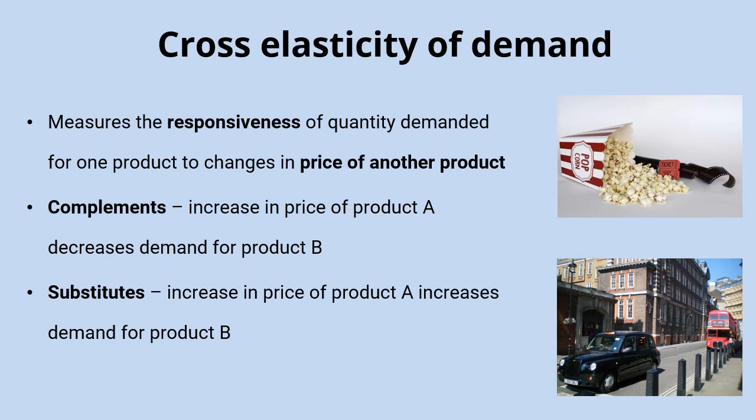Fewer people going to the cinema means fewer people buying popcorn, so demand for popcorn decreases. With substitutes, an increase in the price of one product leads to an increase in demand for the other. For example, if bus ticket prices rise, more people will travel by taxi instead, increasing demand for that substitute good.